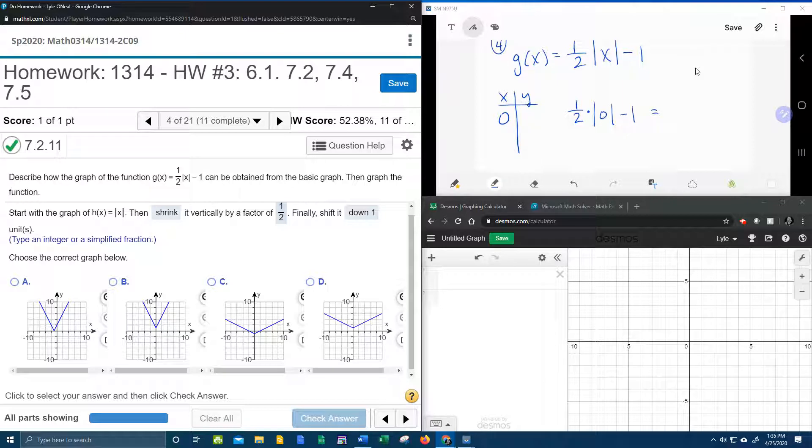The absolute value of zero is zero. One-half times zero is zero. And zero minus one is negative one. And so that's going to give us an ordered pair of (0, -1).